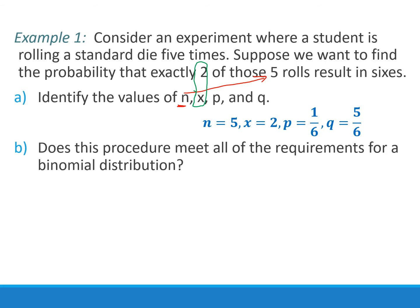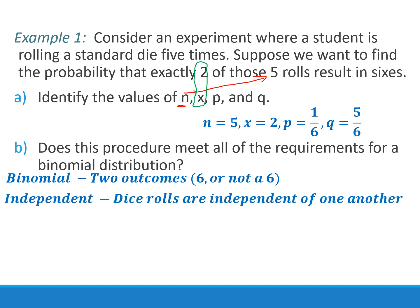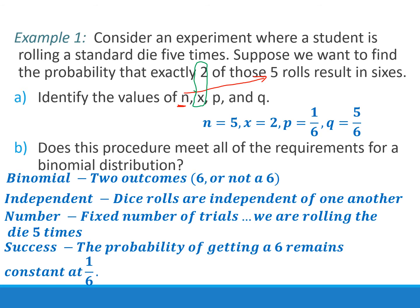Part B: does this meet all the requirements for a binomial distribution? We want to go through those four criteria. It's binomial because there's two outcomes - we're either going to roll a six or we're not. I is independent. Dice rolls are independent of one another. If we roll a six on the first roll, it doesn't affect the probability of rolling or not rolling a six on the following roll. N is number - are there a fixed number of trials? Yes, we're rolling the die five times and then we're stopping. And S is success - the probability of getting a six remains constant at one over six.